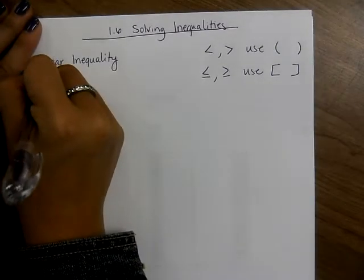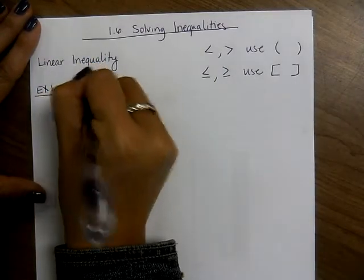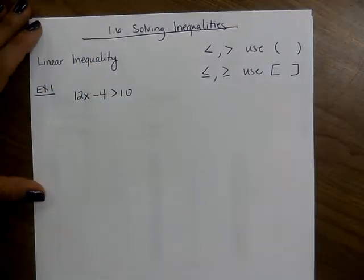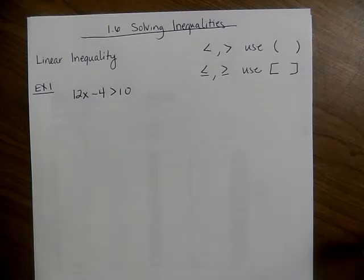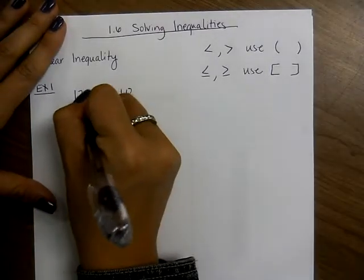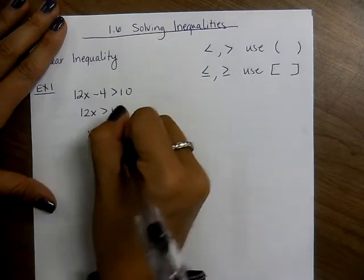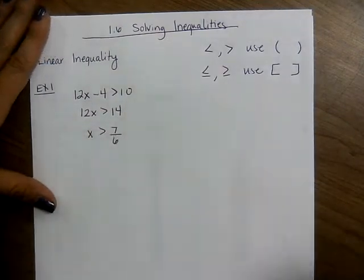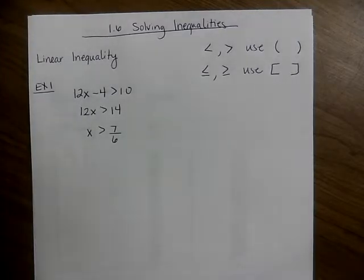Let's do an example. 12x minus 4 is greater than 10. When you have an inequality, you solve it just like an equation. We're going to add 4 to both sides, then divide by 12. We simplify and get 7 over 6. So x is greater than 7 over 6.